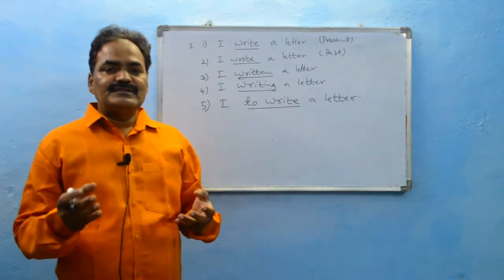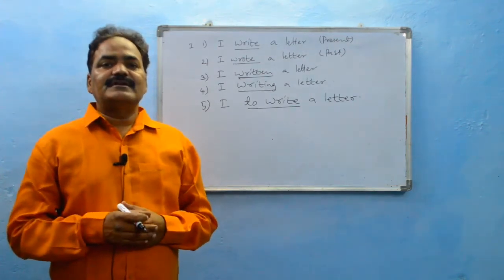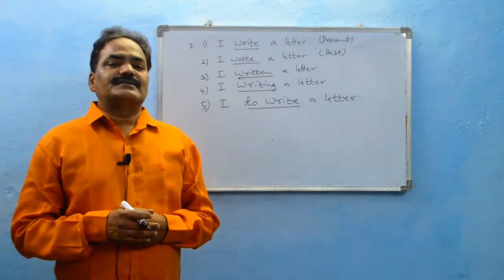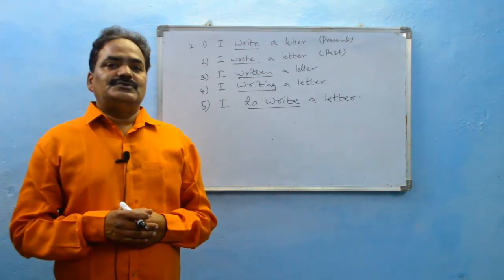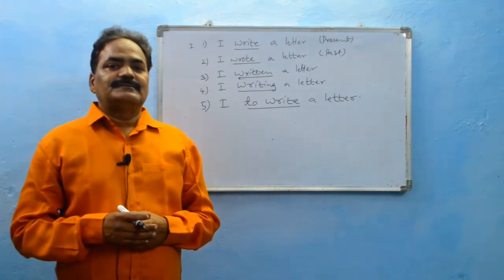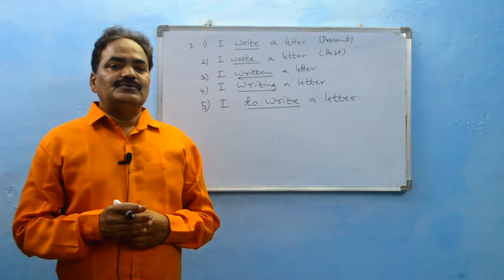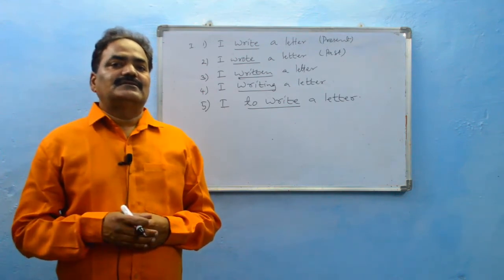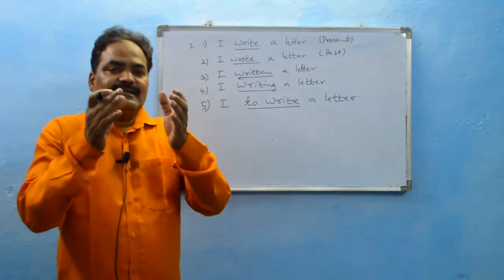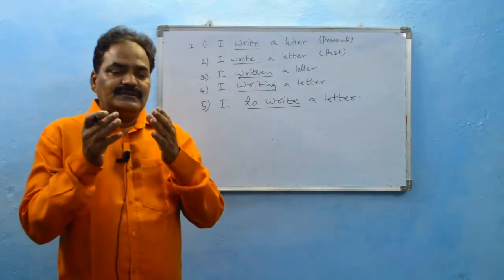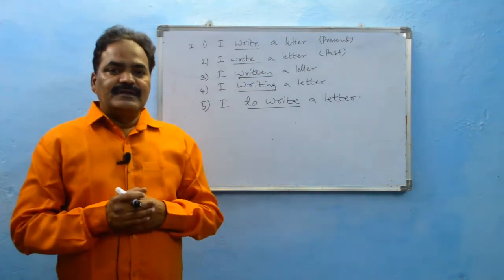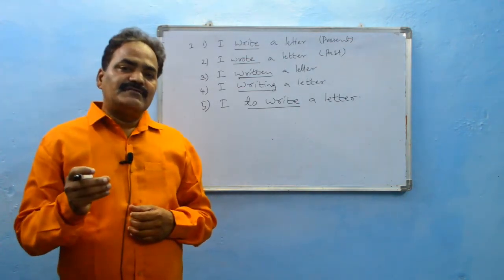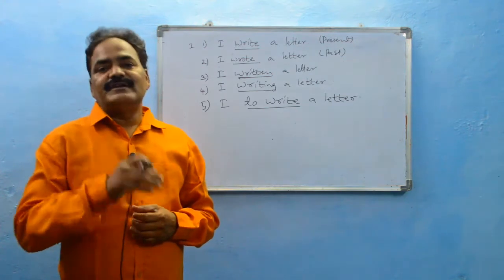Infinitives are formed just by placing the word 'to' before the present form of verb. For example: to see, to write, to run, to sleep, to eat — like this. These are called infinitives; with another name we can say 'to-infinitives'.